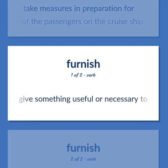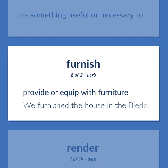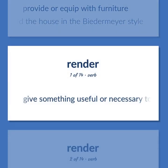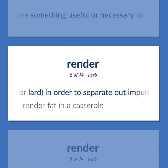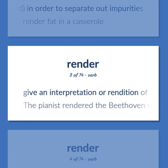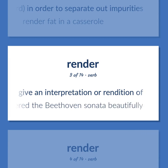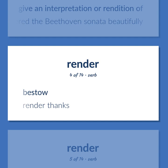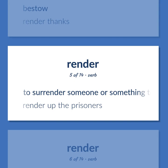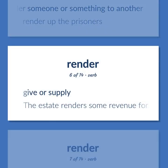Give something useful or necessary to. Furnish: provide or equip with furniture. Example: We furnished the house in the Biedermeier style. Give something useful or necessary to. Render: melt fat or lard in order to separate out impurities. Example: Render fat in a casserole. Give an interpretation or rendition of. Example: The pianist rendered the Beethoven sonata beautifully. Bestow — render thanks. To surrender someone or something to another. Example: Render up the prisoners. Give or supply. Example: The estate renders some revenue for the family.